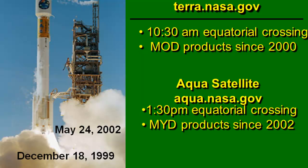Terra was launched in late December 1999 and passes over the equator at about 10:30 in the morning, so we've had MODIS data from Terra since about 2000. Aqua was launched in 2002, so we've had data from Aqua's MODIS sensor since 2002.